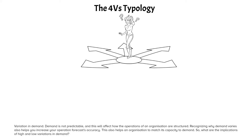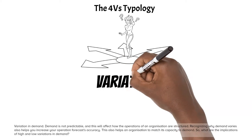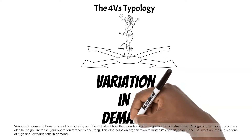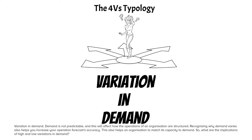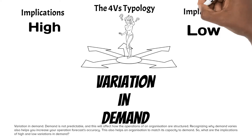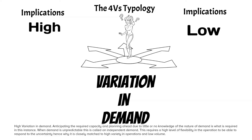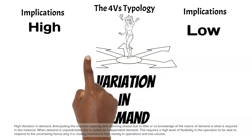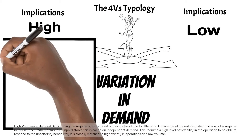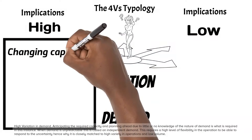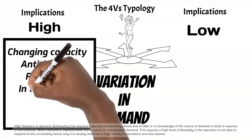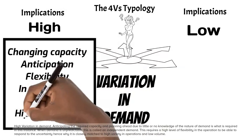Variation in demand: demand is not predictable, and this will affect how the operations of an organization is structured. Recognizing why demand varies also helps increase your operation forecast's accuracy. This also helps an organization to match its capacity to demand. High variation in demand: anticipating the required capacity and planning ahead, due to little or no knowledge of the nature of demand, is required in this instance. When demand is unpredictable, this is called an independent demand, which requires a high level of flexibility in operations. That is why it is closely matched to high variety in operations and low volume.